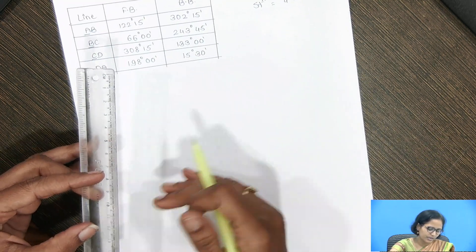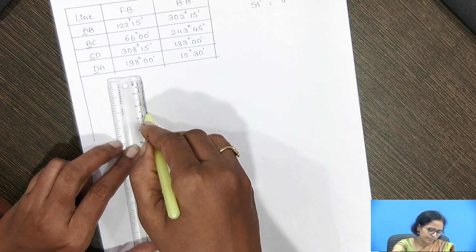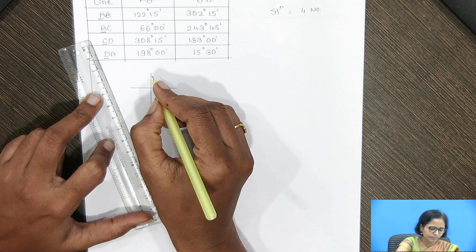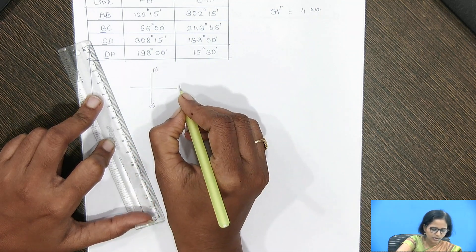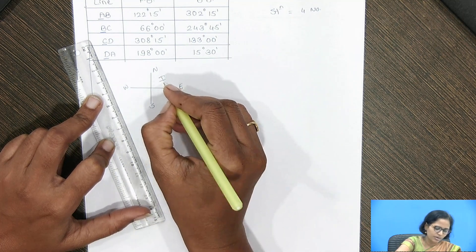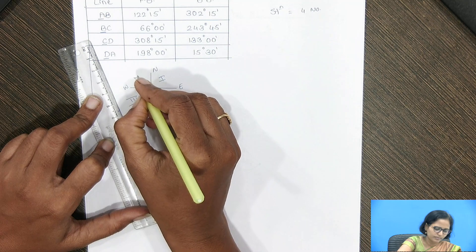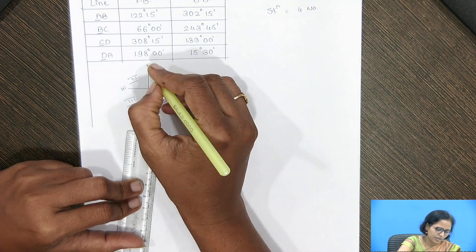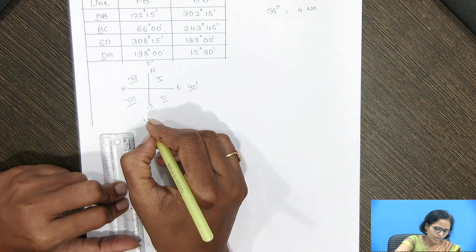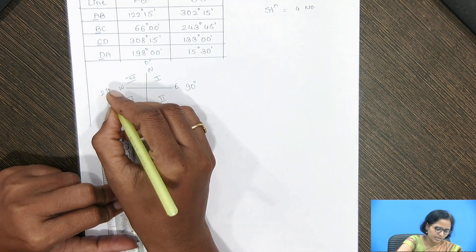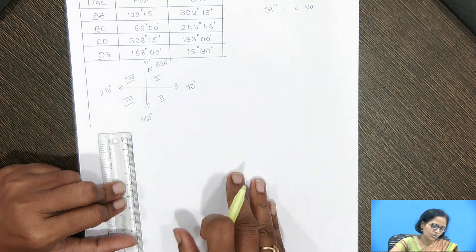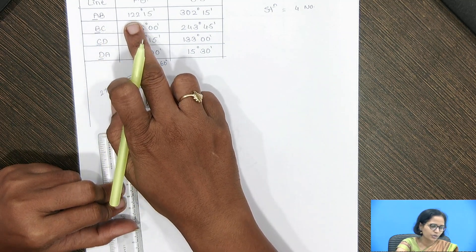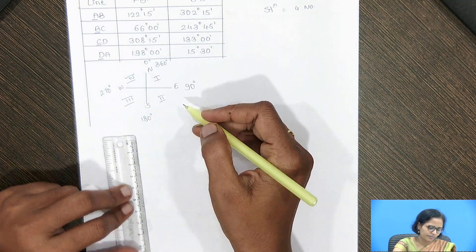As explained in the previous video, readings are always measured in the clockwise fashion with respect to north. We have north, south, east, and west — giving the first, second, third, and fourth quadrants at 0, 90, 180, 270, and 360 degrees. The fore bearing from A to B is 122 degrees 15 minutes, which falls in the second quadrant.